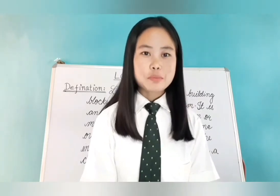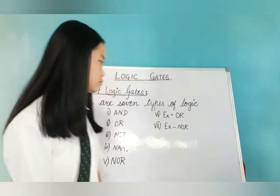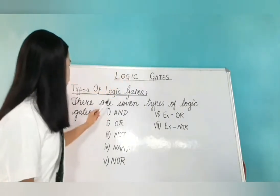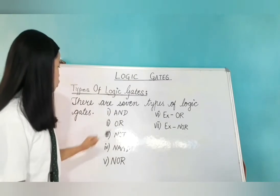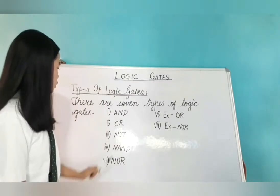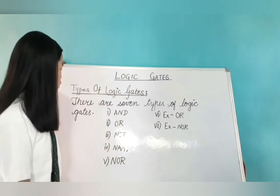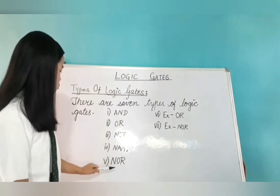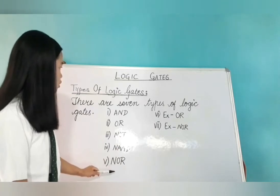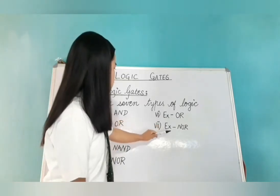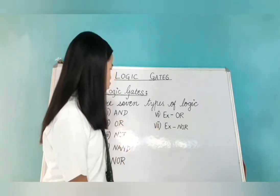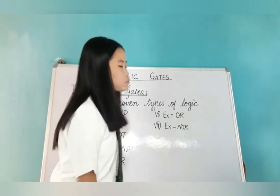Now, let us see the types of logic gates. There are seven types of logic gates. They are: number one, AND; number two, OR; number three, NOT; number four, NAND; number five, NOR; number six, XOR; number seven, XNOR.